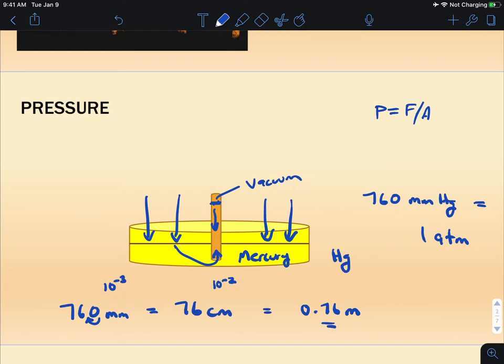Now if I were to take this trough of mercury, this barometer, up to, say, mile-high stadium, where the atmospheric pressure there is only 0.8 atmospheres, so it's about 80% of what it is down here, the mercury would only rise to 80% of that. You could just do 0.8 times 760 to figure out what that is. But it would rise less.